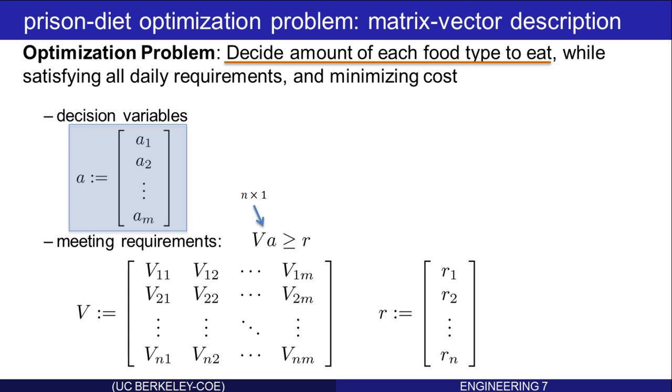So we have an N by 1 vector here. An N by 1 vector here. And this greater than or equal means it must hold element-wise. Every element on the left must be greater than or equal to its corresponding element on the right. And that expresses satisfying all daily requirements.